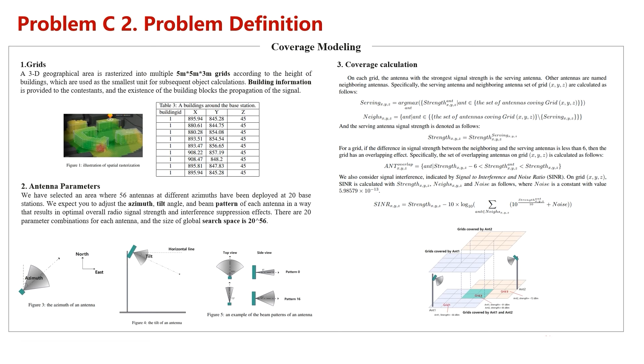Let's imagine: if you set azimuth to 45 degrees, it may cover grids 1, 2, and 3. If you change it to 60 degrees, it may cover grids 3, 4, and 5. You may also find the size of the global searching space is very large, so grid searching algorithm is infeasible.